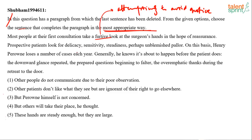So most people — prospective patients — look for delicacy, sensitivity, steadiness, perhaps unblemished pallor. We'll discuss the meanings of 'unblemished' and 'pallor' as well. On this basis, Henry Perron loses a number of cases each year — on the basis of delicacy, sensitivity, steadiness, perhaps even the unblemished pallor. Generally, he knows it's about to happen before the patient does.